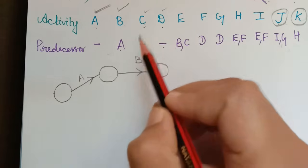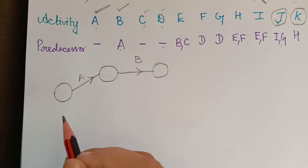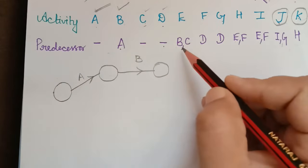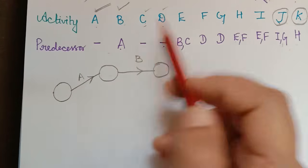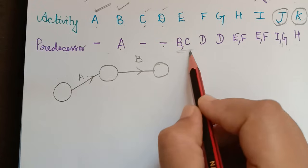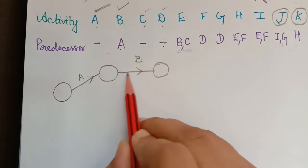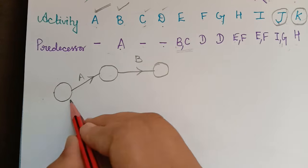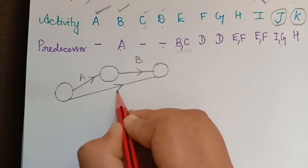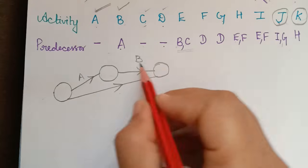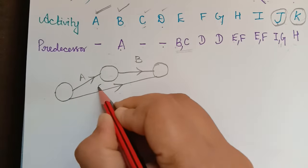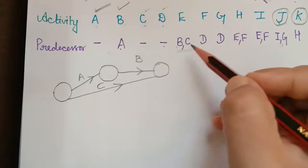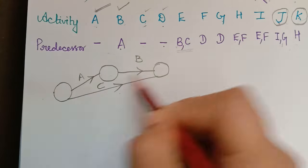Activity C has no predecessor, but we must check whether it appears alongside any already-completed activity in the predecessor list. C appears together with activity B, which is already completed. So activity C starts from a new node but must end at the same node as B, because they appear together as predecessors.